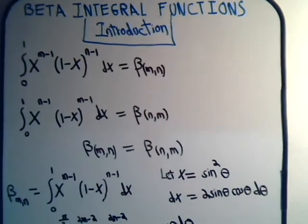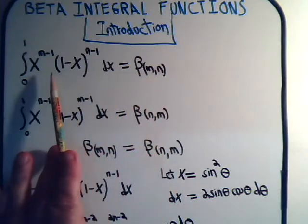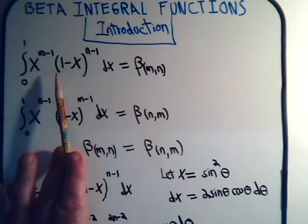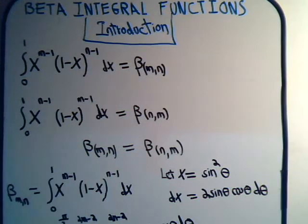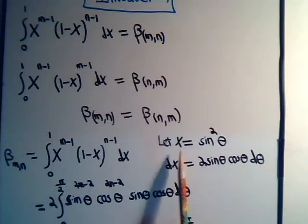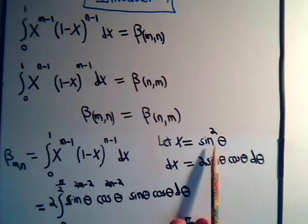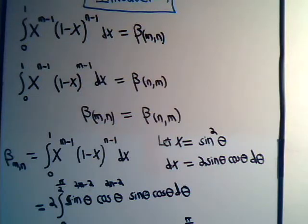Now, this definition that we have here, sometimes you'll see it in a trig form. So we look at it - here was our starting definition - and we say, well, let's let x be equal to sine squared of theta. Then dx will equal 2 times the sine of theta, cosine of theta, d theta.